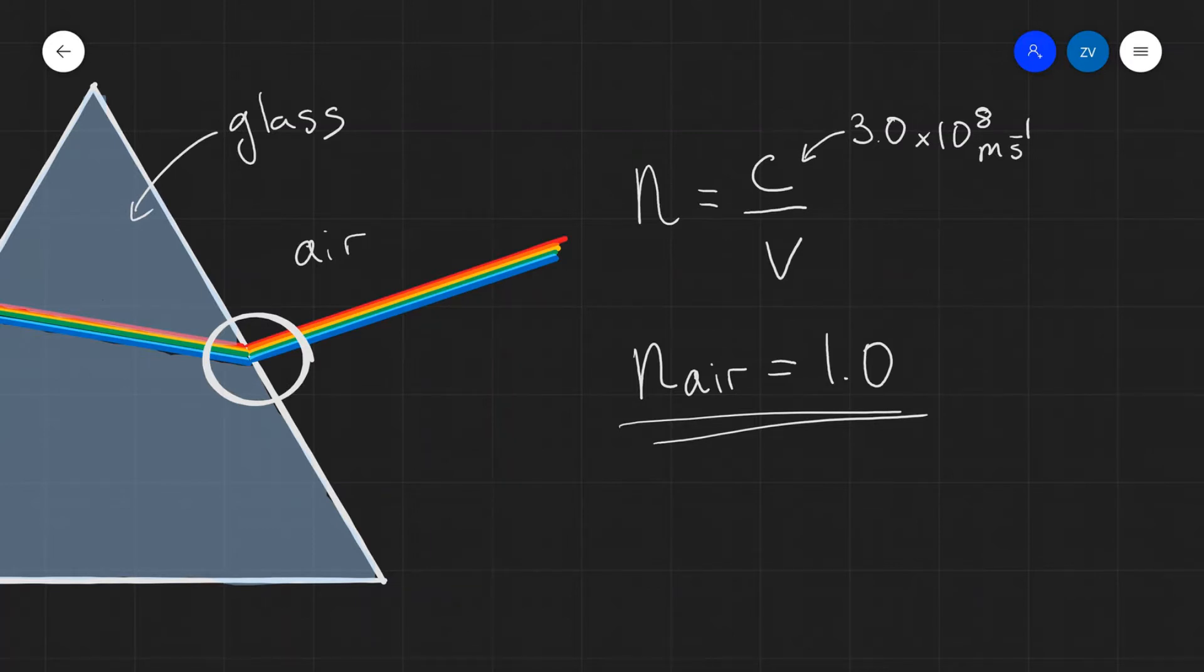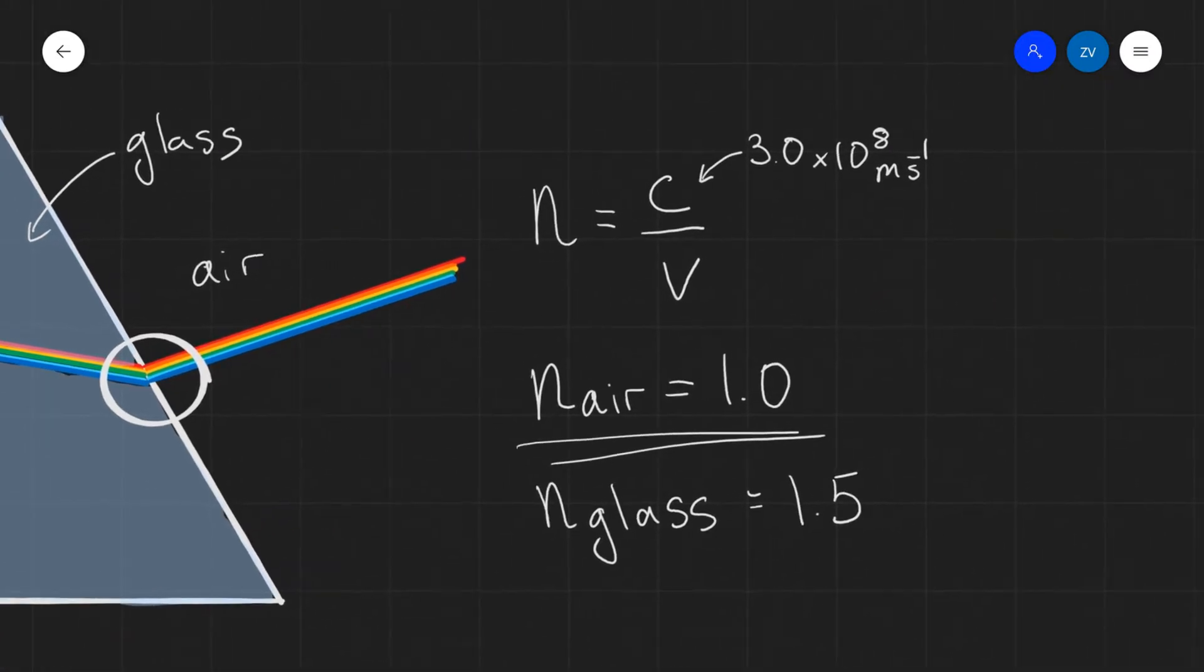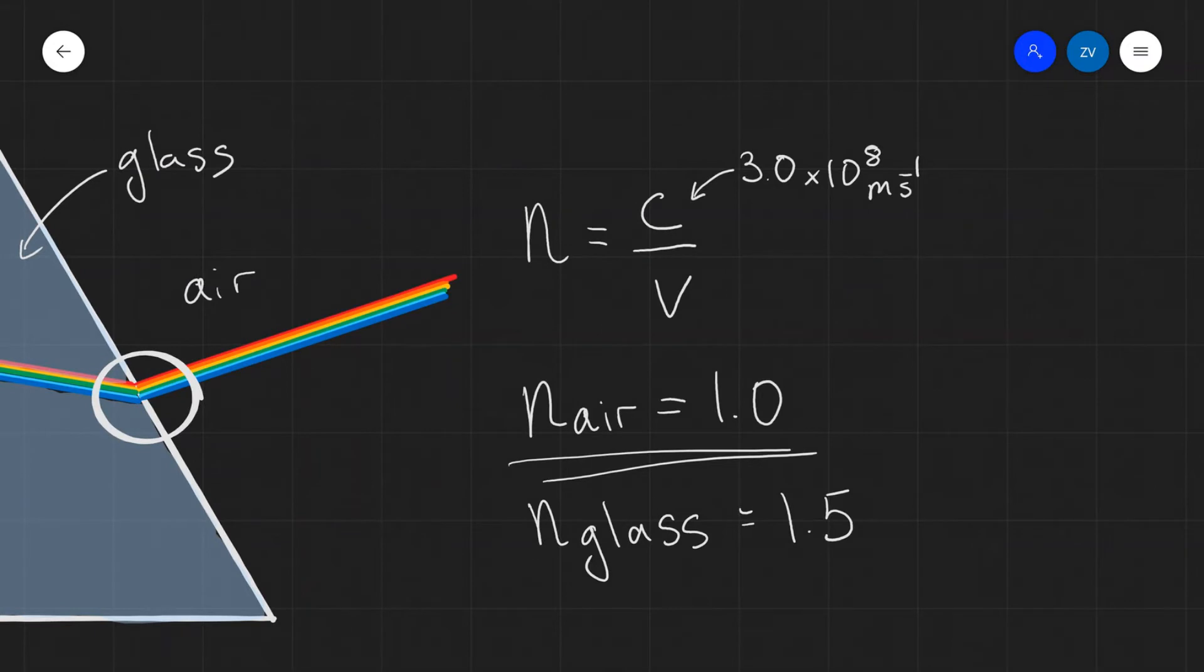Additionally, the refractive index of glass depends a little bit on the type of glass. However, it will normally be close to the region of approximately 1.5. Notice that those values which I've just given have no units. This is because the refractive index is calculated by the speed of light in a vacuum divided by the speed of light in a substance. C is measured in meters per second, V is also measured in meters per second. Meters per second divided by meters per second will give us no units, so there are no units attached to the refractive index.